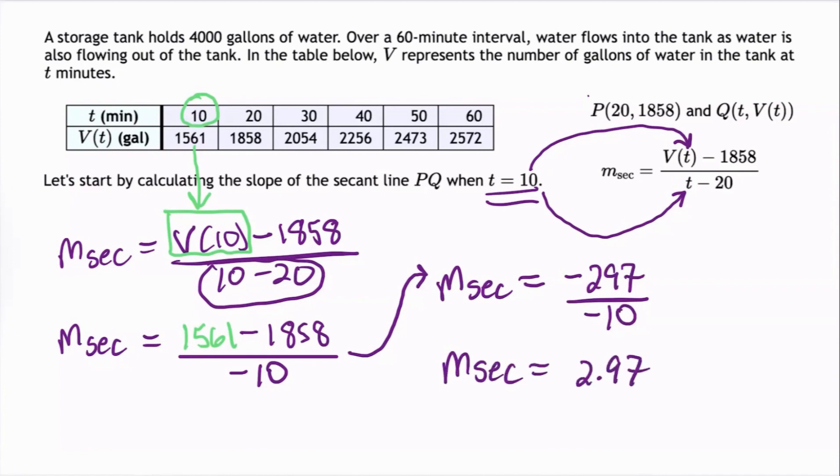Now typically we would put the units on. The output units are gallons and the input units are minutes. So M_sec is 2.97 gallons per minute, but we're only asked to enter the numerical value 2.97.